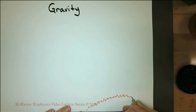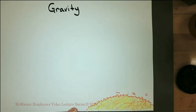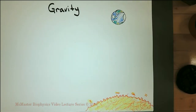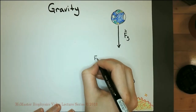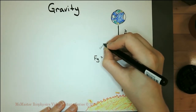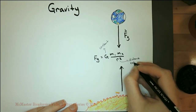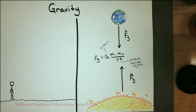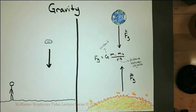Let us briefly leave kinematics to discuss gravity. Gravity is a mysterious field force that causes objects with mass to be attracted to one another — for example, the Earth and the Sun. The force of gravity can be calculated with a formula where capital G is a constant, M1 and M2 are the masses of the objects, and R is the distance between them. On the Earth's surface, gravity makes things fall down. Without air resistance, all items, regardless of their mass, fall at the same rate.